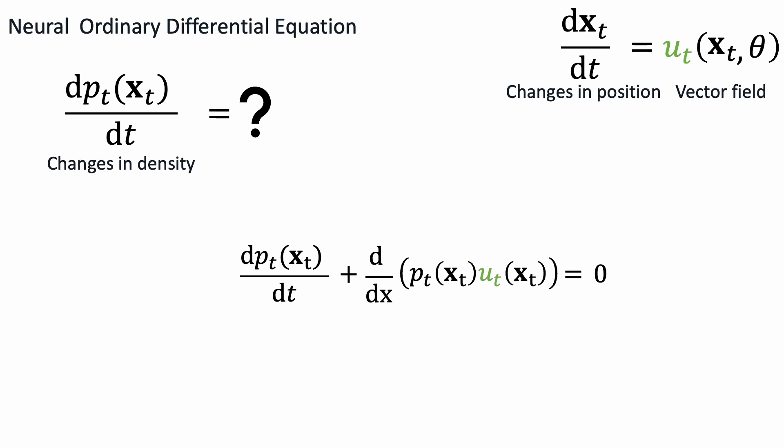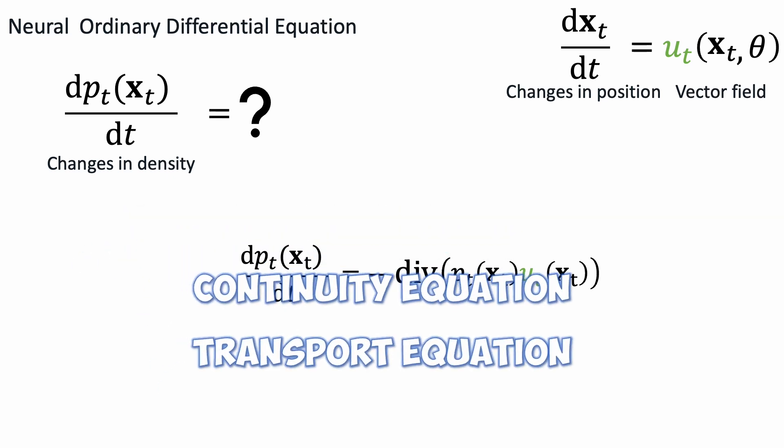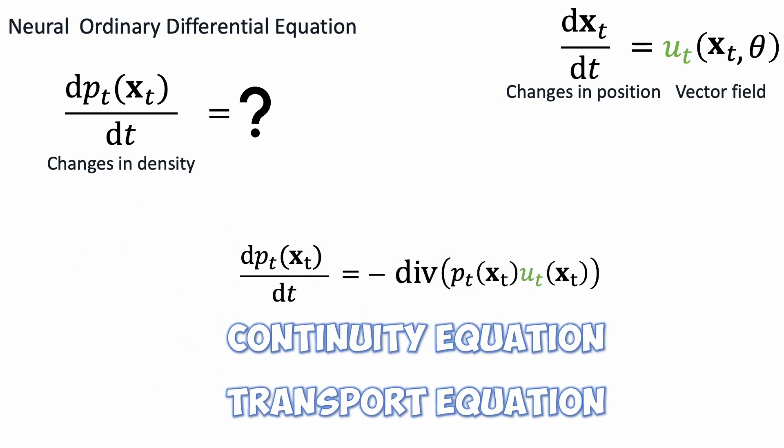The sum of the change in probability density and the local outgoingness must remain zero. The same relation holds for higher dimensional data, so we can replace the x gradient with a general gradient operator, and denote that as a divergence. This is known as the continuity equation, or transport equation.